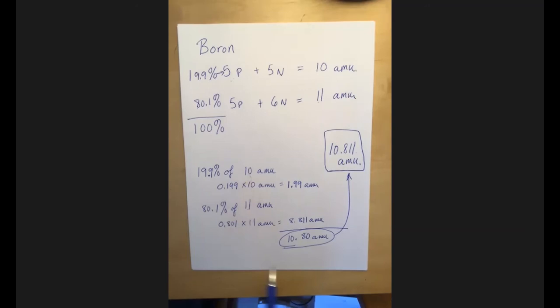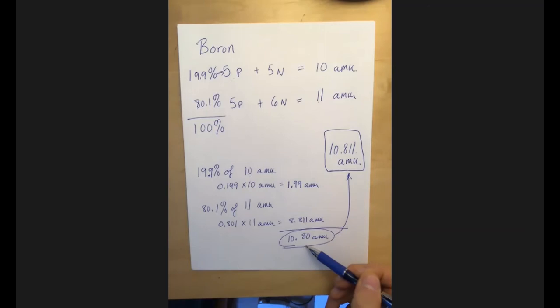So when you add up those two results, you get 10.80 AMUs. And so when we see this number on the periodic table, this 10.811, it's the weighted average of the isotopes for the two common isotopes of boron.